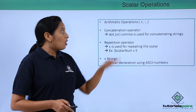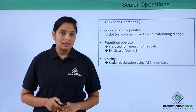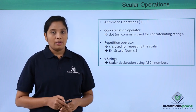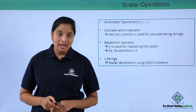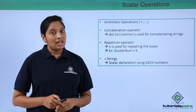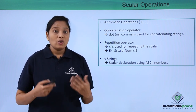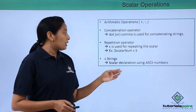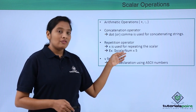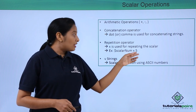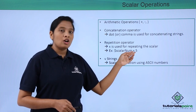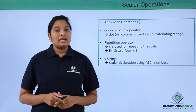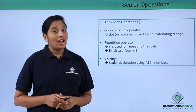You can also perform arithmetic operations on scalars. The concatenation operator to be used is dot or a comma. A repetition operator can be used to repeat the scalar variable any number of times you want. For example, if you want to repeat the value in the variable scalar num for 5 times, you can use the repetition operator called small x. You can also declare V strings with the help of ASCII numbers.